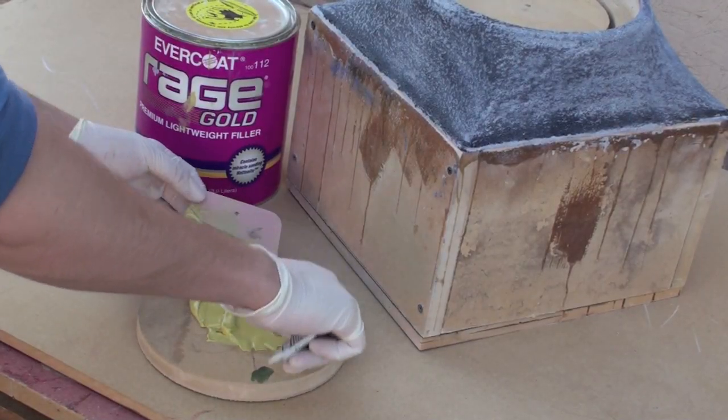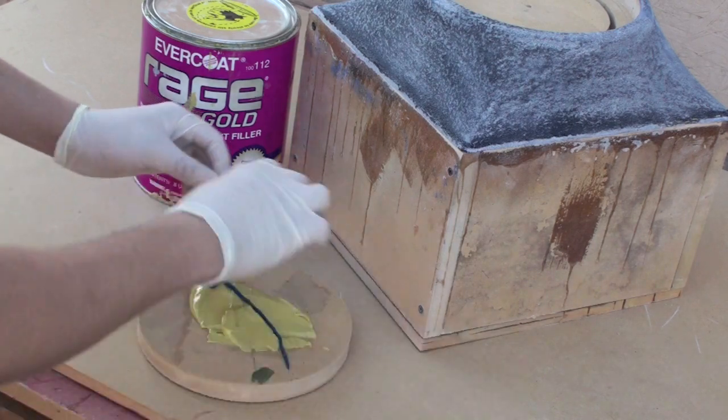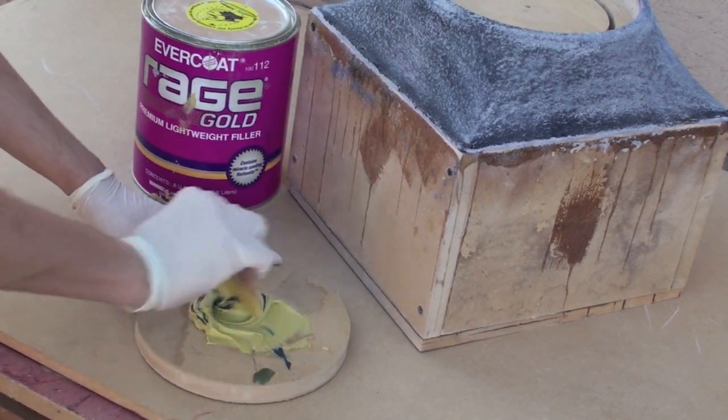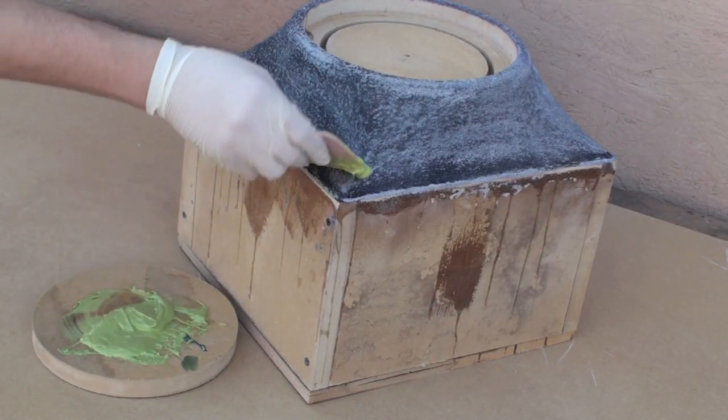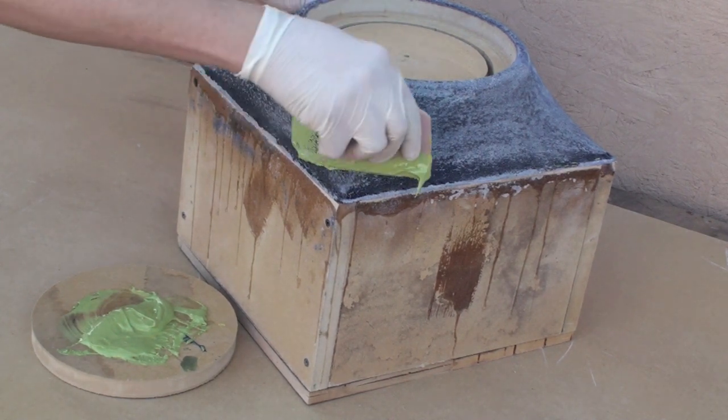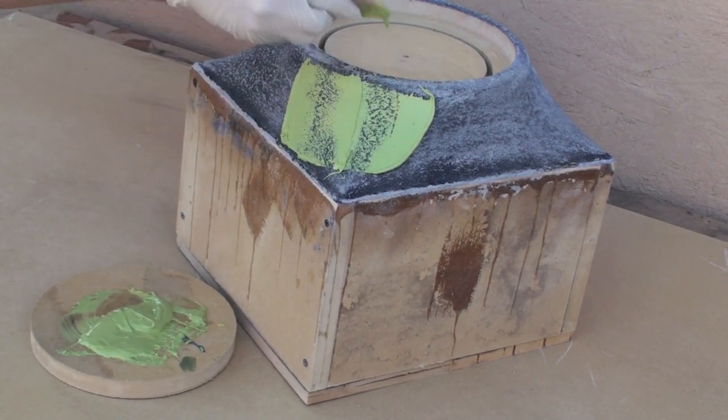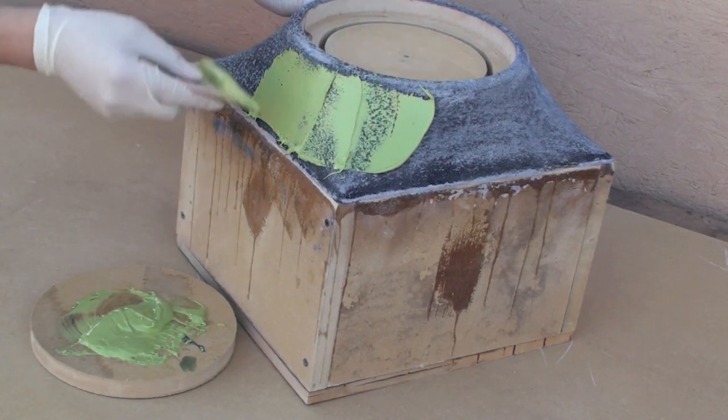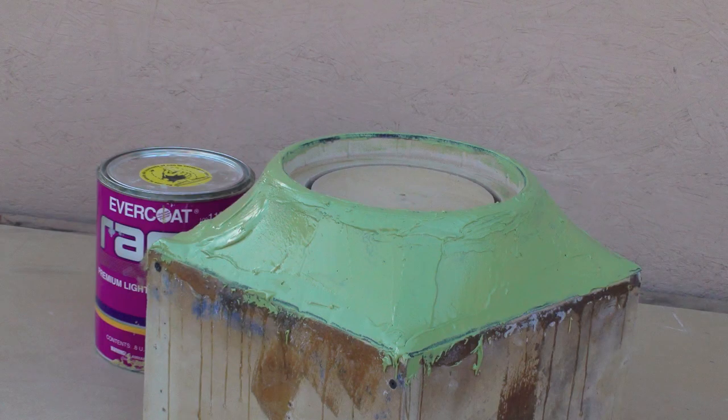When the sanding is complete, begin mixing the body filler. Keep mixing until it becomes one solid color, then apply it throughout the box. Be sure to completely cover the baffle. Now let it cure for a few minutes.